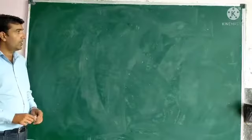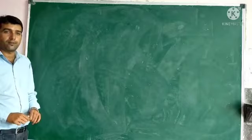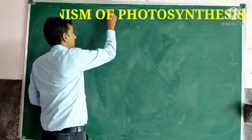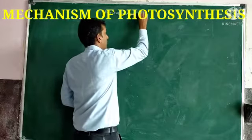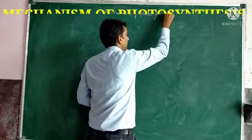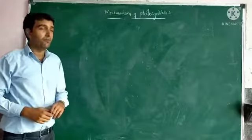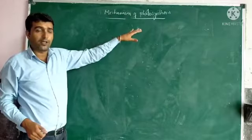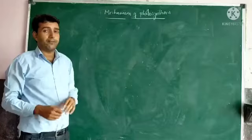Hello students, today in this video class we are going to discuss the mechanism of photosynthesis. Photosynthesis means it is the synthesis of food while the plant is in the presence of carbon dioxide, water, chlorophyll, and sunlight. This process is said to be photosynthesis.